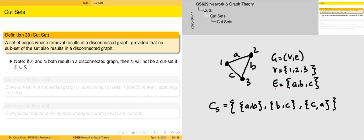As an example, in the case of this K3 graph, we can identify three cut sets. The first one being AB — if you were to remove these from the graph, we will have the first component comprising of vertices 1 and 3, and the second component will comprise of vertex 2. If we take the case of BC, it will result in similar behavior, and similarly for CA. This is basically the concept of division of a graph into multiple components.